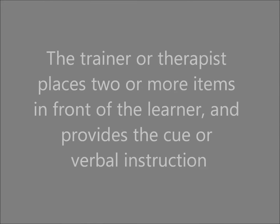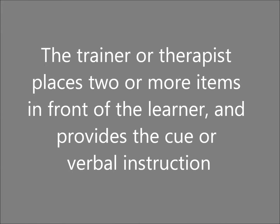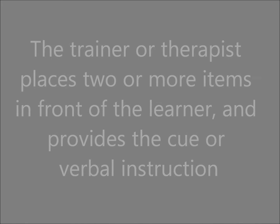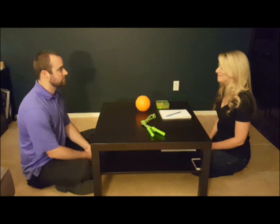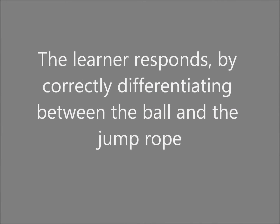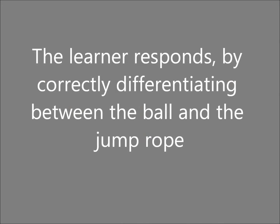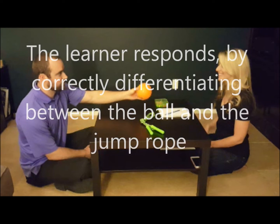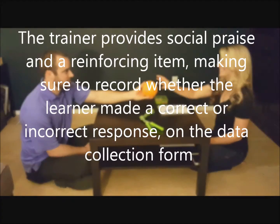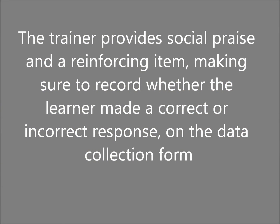The trainer or therapist places two or more items in front of the learner and provides a cue or verbal instruction. The learner responds by correctly differentiating between the ball and the jump rope. The trainer then provides social praise and a reinforcing item, making sure to record whether the learner made a correct or incorrect response on the data collection form.